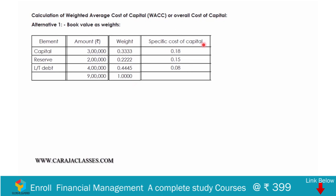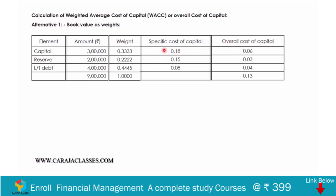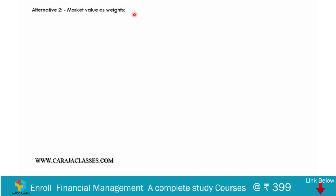The specific cost of capital for each source: equity capital is 18%, reserves is 15%, long-term debt is 8%. Multiplying each specific cost by its weight: 0.18 × 0.333 = 0.06, 0.15 × 0.222 = 0.03, 0.08 × 0.4445 = 0.04. Adding all weighted costs: 0.06 + 0.03 + 0.04 = 0.13. So the weighted average cost of capital based on book value is 13%.